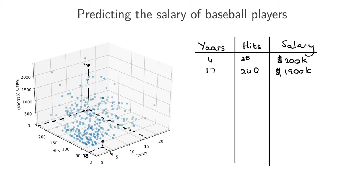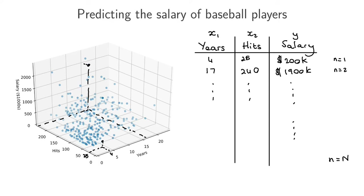The dataset contains many different points, and we might want to use it to train a regression model which takes in the years played as one feature, the hits as a second feature, and then tries to predict the salary of a player. So we have training data points from n=1 up to big N, and from those we want to train a model that can predict baseball player salaries.